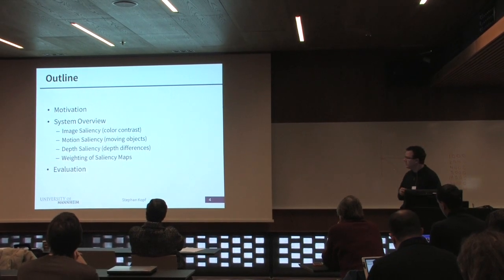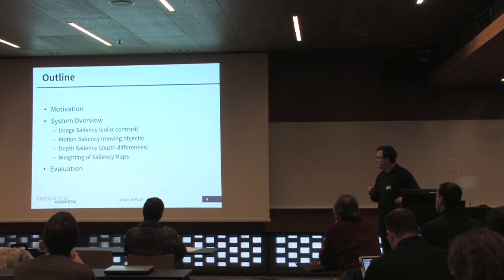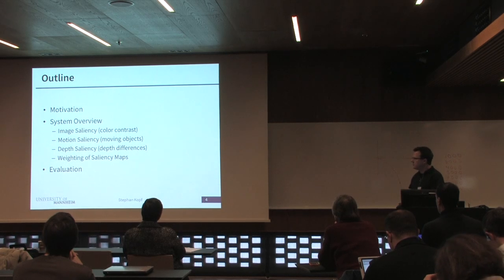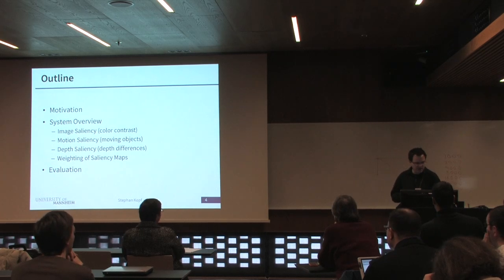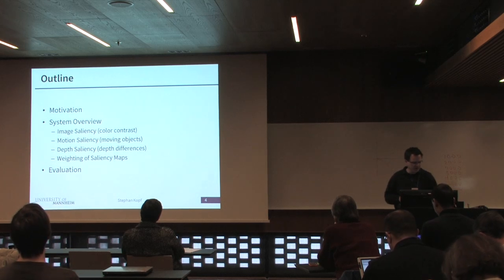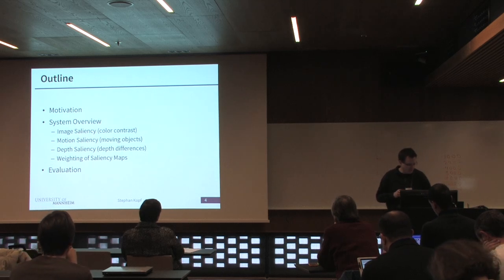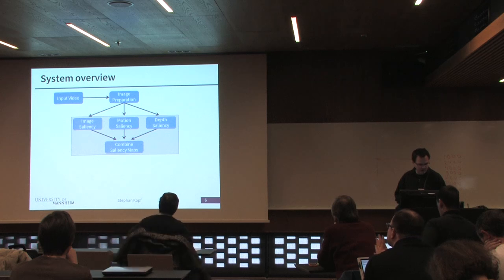After this brief motivation, I would like to give you an overview of the system. We have three different saliency detectors. The first is about image saliency — we look at local contrast in images. The second is about moving objects, and the third is about depth information in the videos. Then I will present some results about how to merge these saliency maps and give you some information about our evaluation.